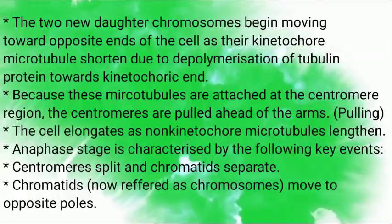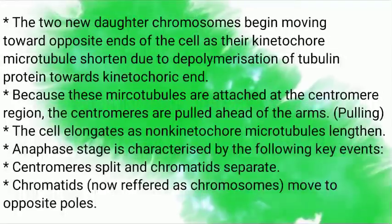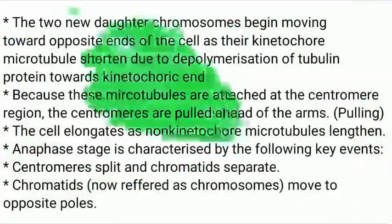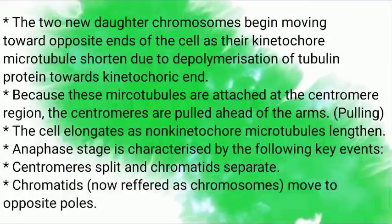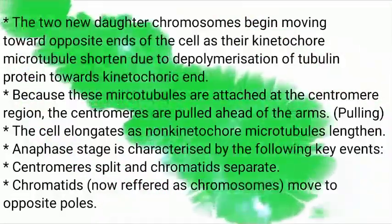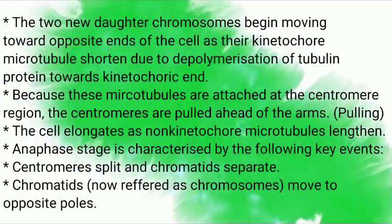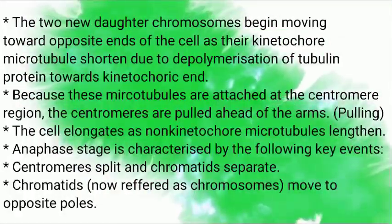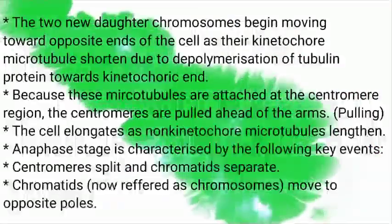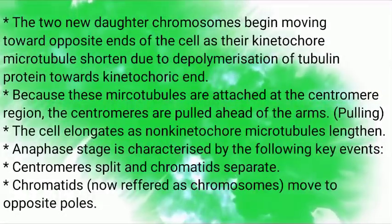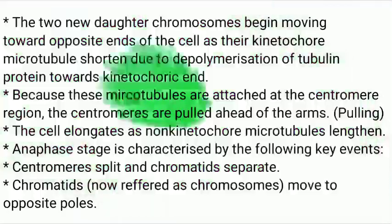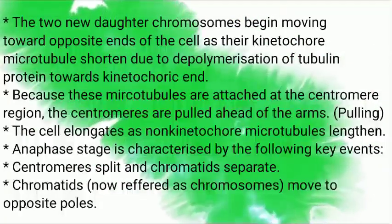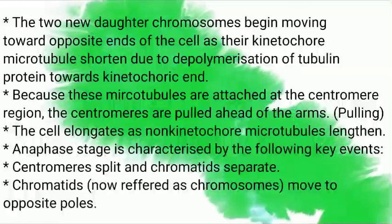Because these microtubules are attached at the centromere region, the centromeres are pulled ahead of the arms as the cell elongates via non-kinetochore microtubules. Anaphase is characterized by the following key points: centromere split and chromatid separation; chromatids, now referred to as new chromosomes, move to opposite poles. The main events in anaphase are centromere splitting and chromatid separation, with separated chromatids considered as daughter chromosomes moving to opposite poles.